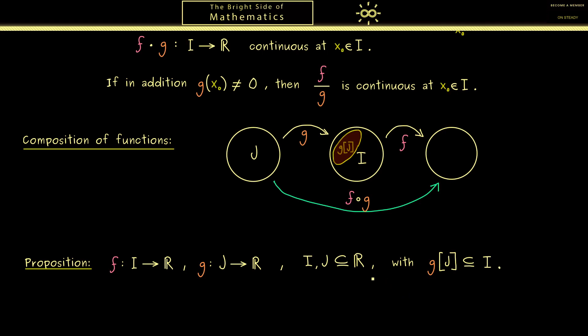Okay now for the continuity we get: if g is continuous and f is continuous also the composition f after g is continuous. However as before we only have to put in continuity at one given point. And now it's x0 in the set J.